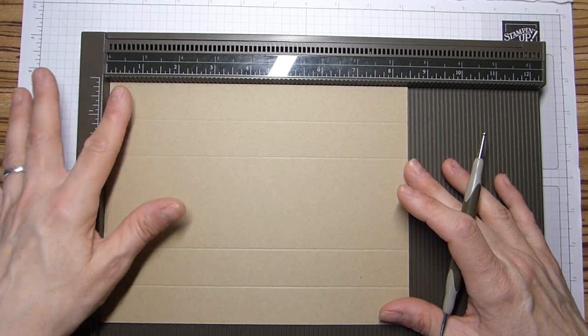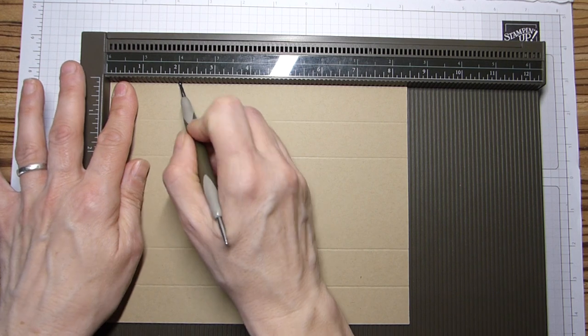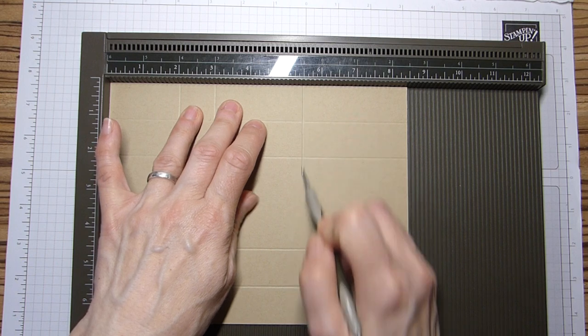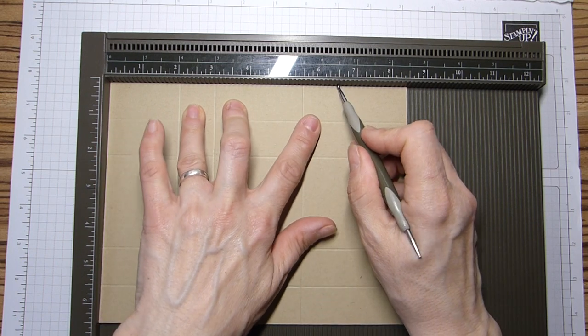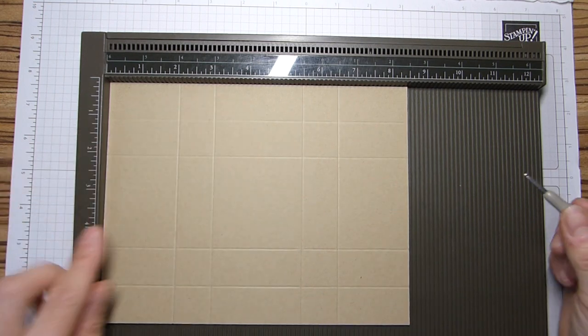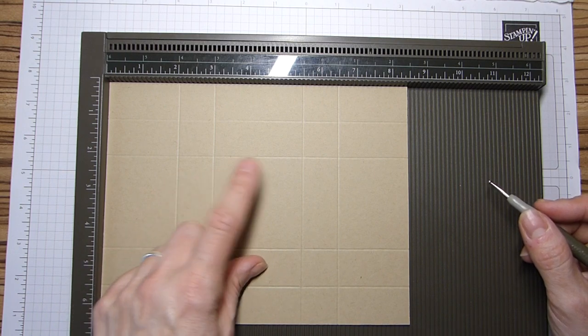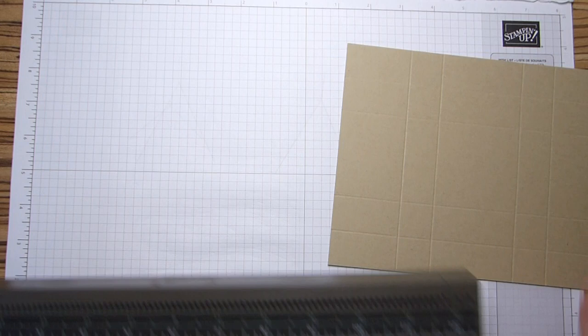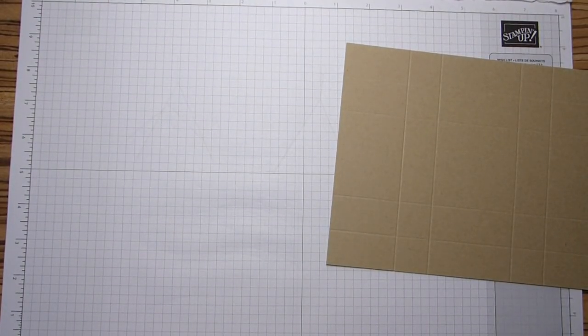We're going to rotate and score on the long side at two, three, five and a half and six and a half, which will be five, seven and a half, 14 and 16 and a half.